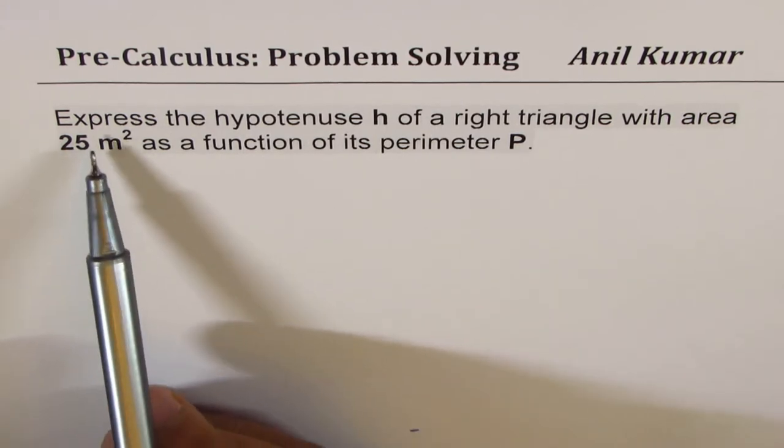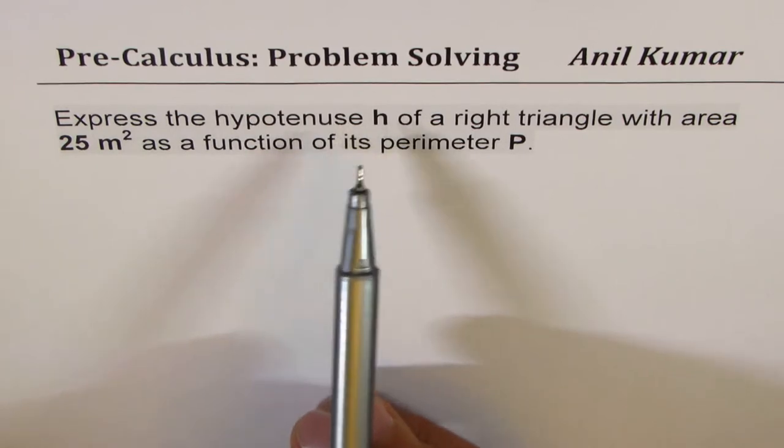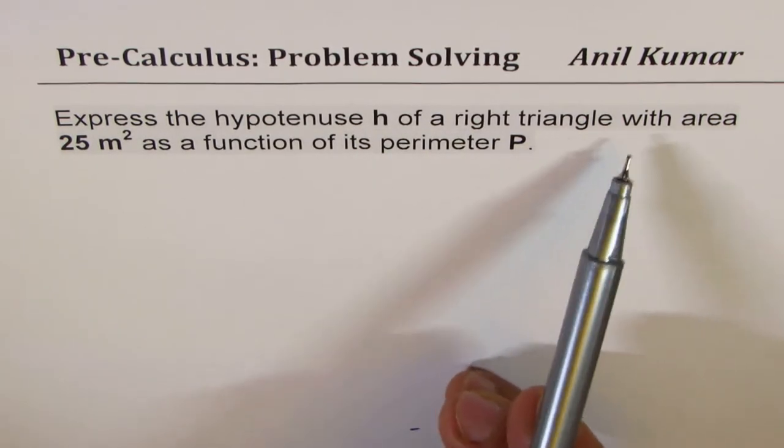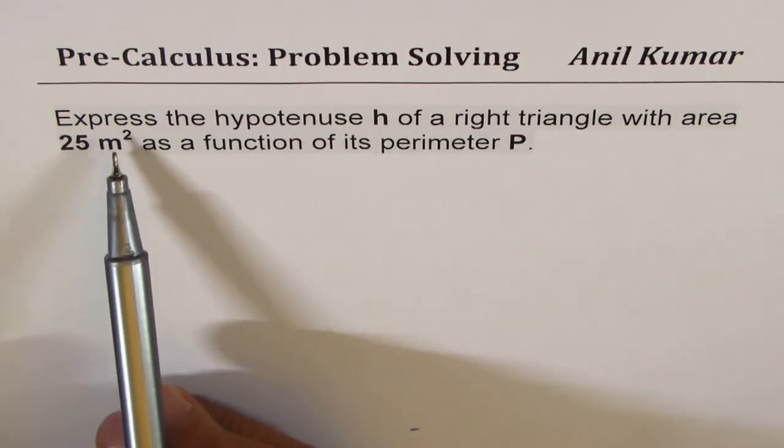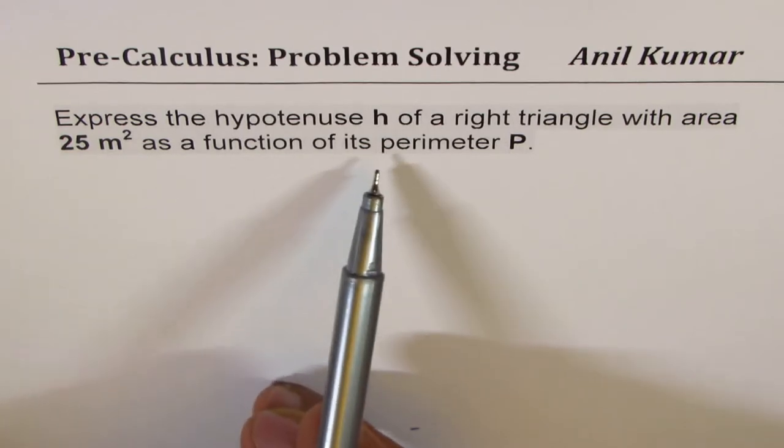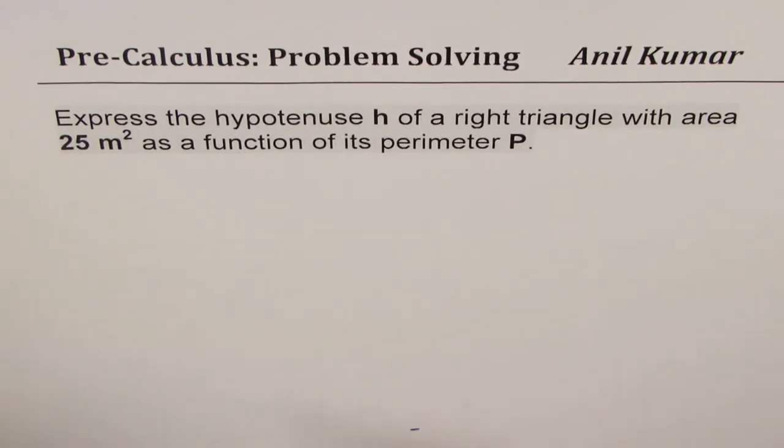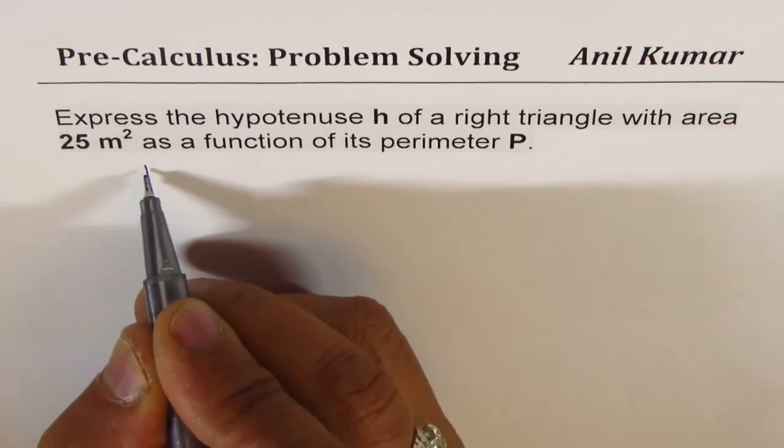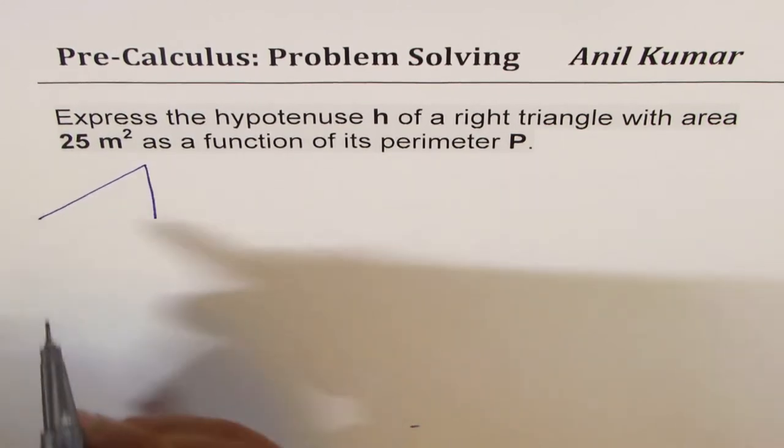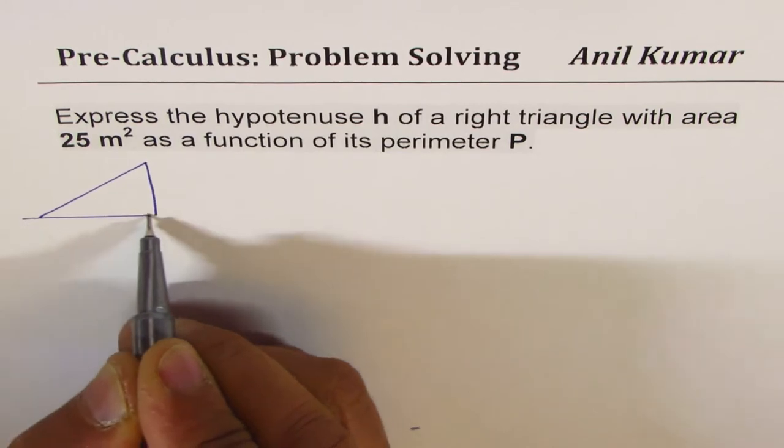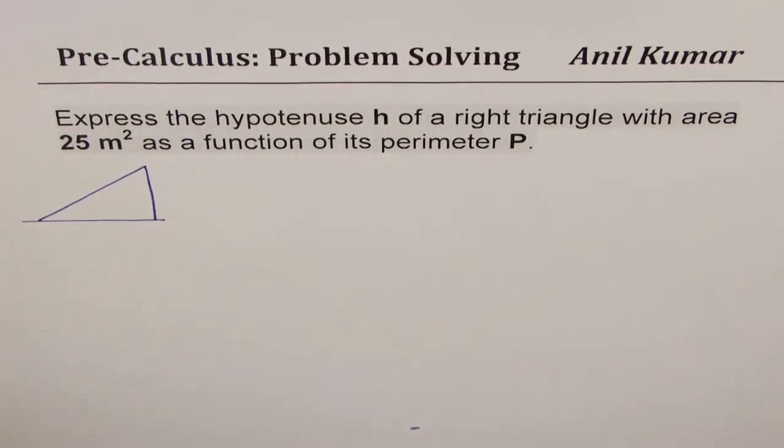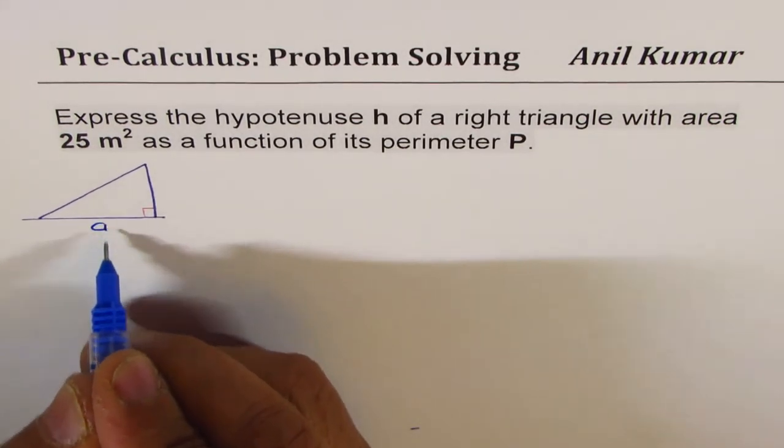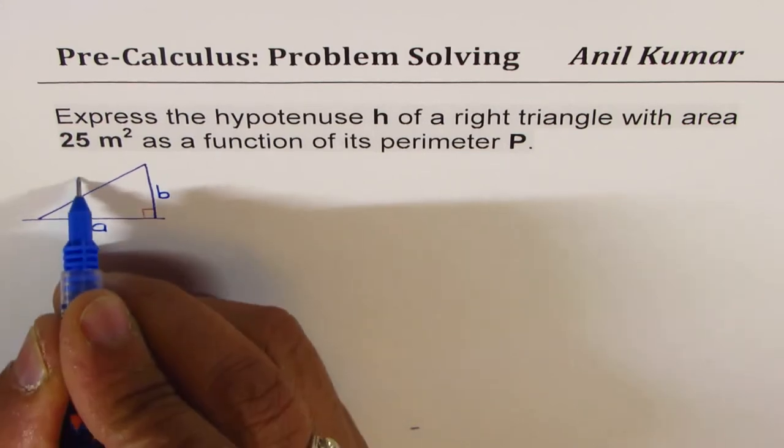The question here is: express the hypotenuse h of a right triangle with area 25 meter square as a function of its perimeter. So let's sketch a triangle first, and let us say this is our right triangle. And let the sides be a, b, and hypotenuse h.